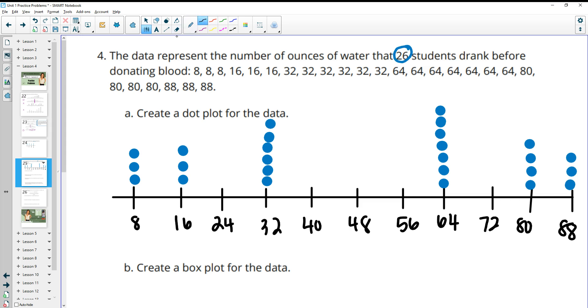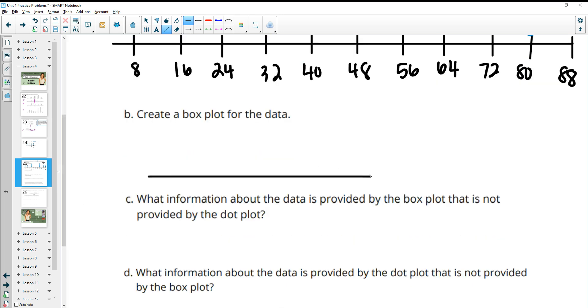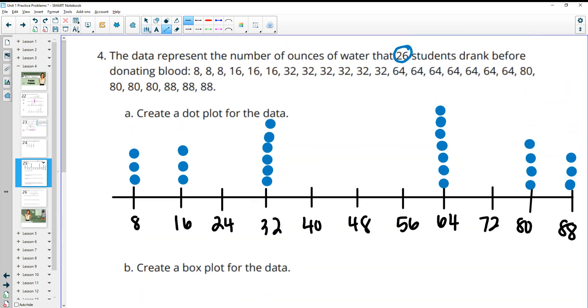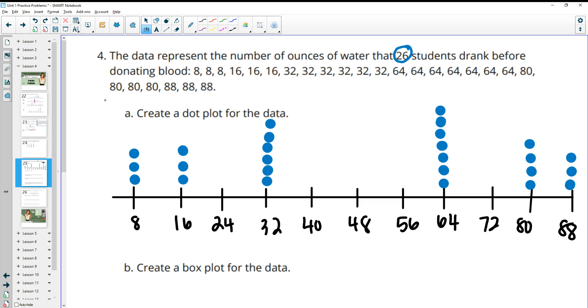Then it wants us to create a box plot for the data. So we're going to need to, again, maybe I'll just use this same scale at the top here. So I'm not going to draw it again. I'm just going to do the box plot under here. So we're going to need our five-number summary. We're going to need our min, which is eight. Then we're going to need our Q1, our median, our Q3, and we're going to need our max. So our max is 88.